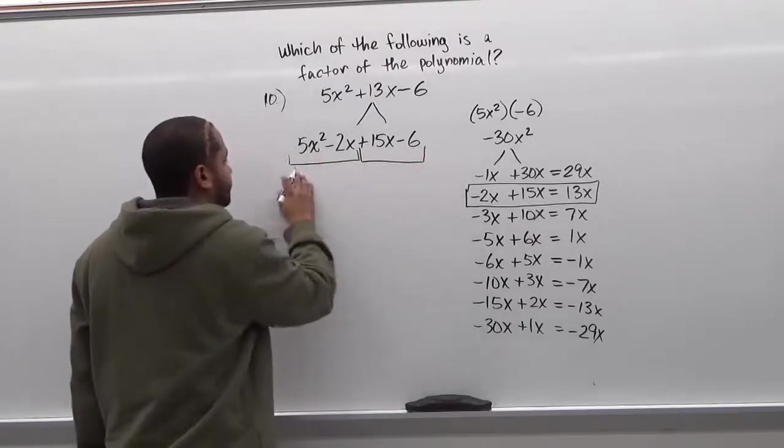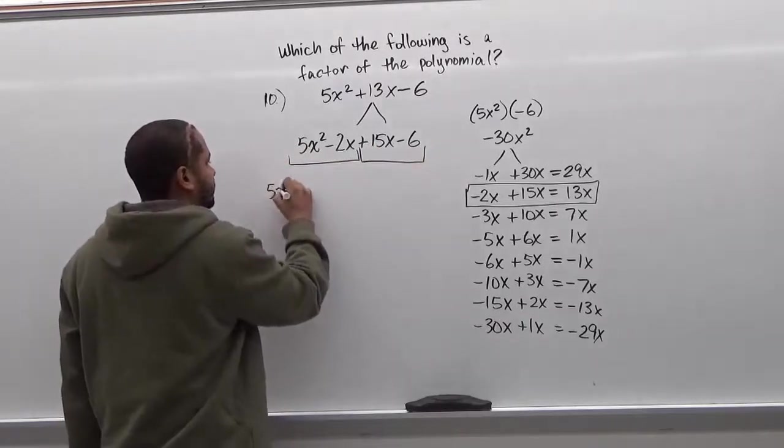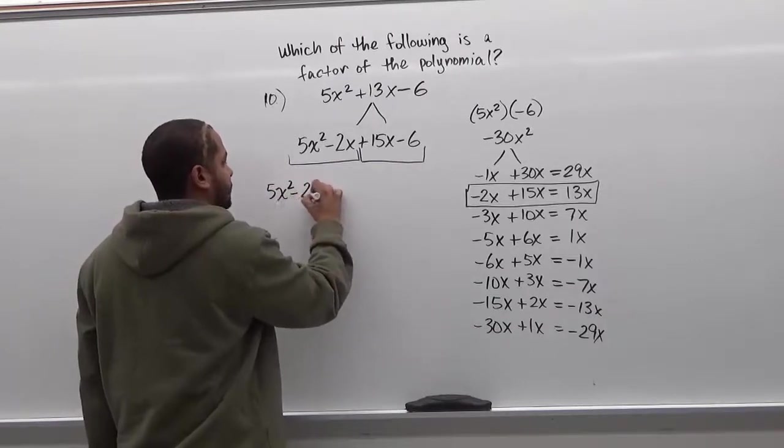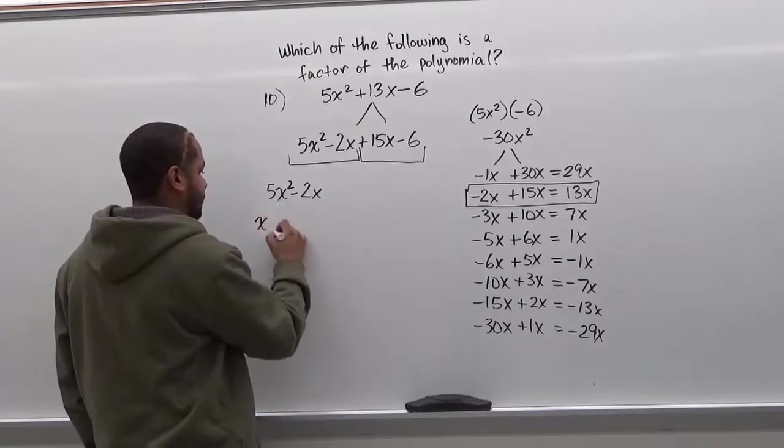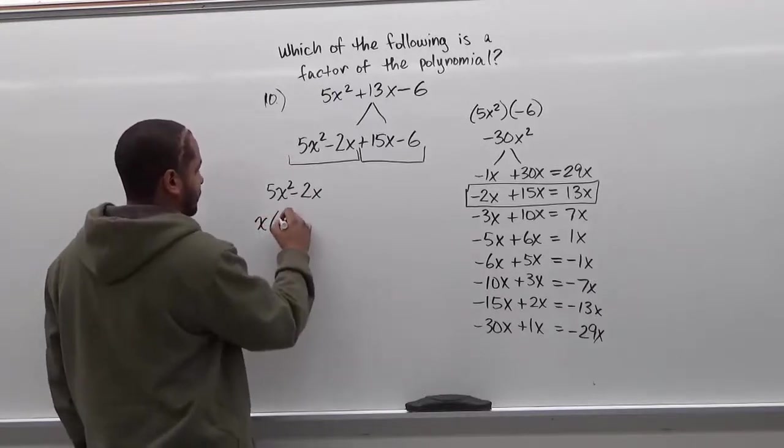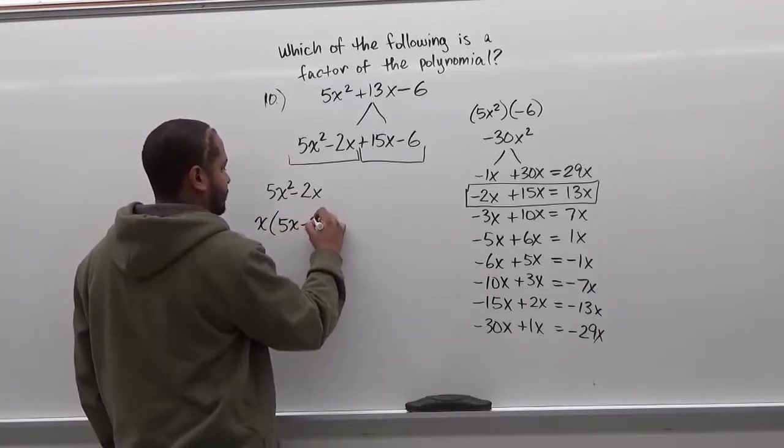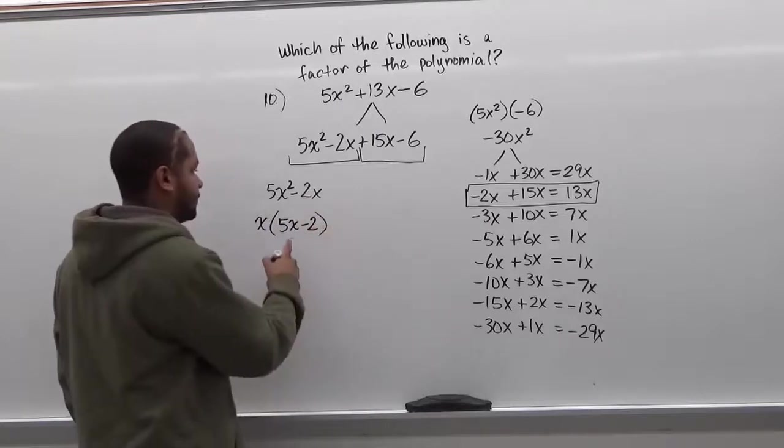So the first two will be our first group and we have 5x squared take away 2x, and here the only common factor they have is just x and what's left over is going to be 5x take away 2 once we take away the GCF.